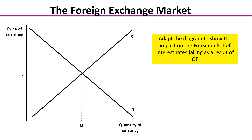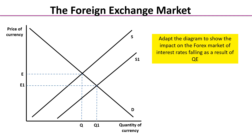In the foreign exchange market, we again use a micro diagram with the price of currency and quantity of currency on the axes, with equilibrium at exchange rate E and equilibrium quantity Q. We want you to adapt that diagram to show the impact on the forex market of an interest rate falling as a result of quantitative easing. With some luck, you might have shown the supply curve shifting to the right: as interest rates fall, hot money flows out of the country and therefore the supply of sterling increases on forex.